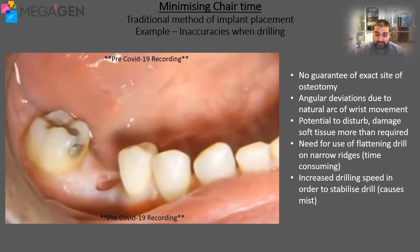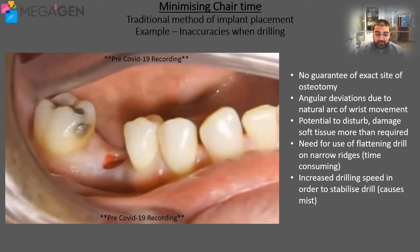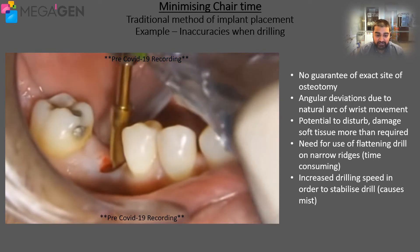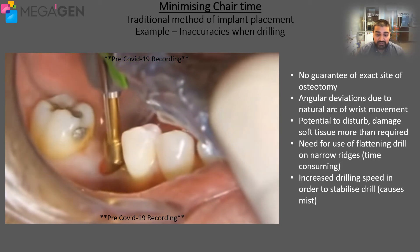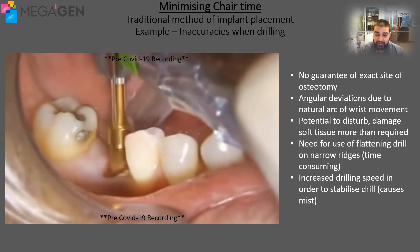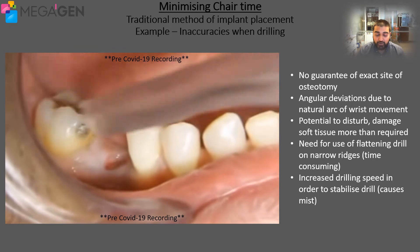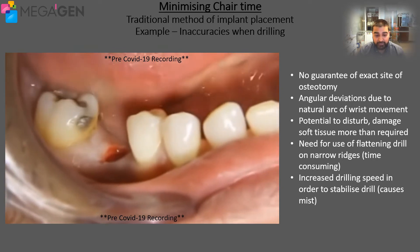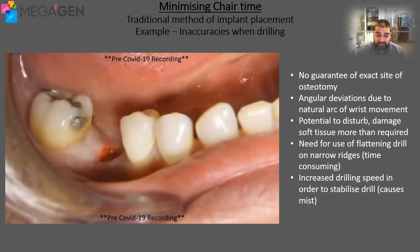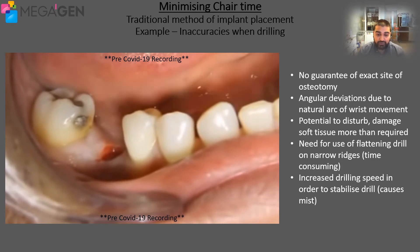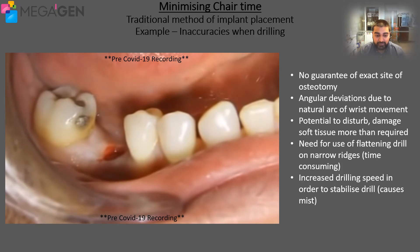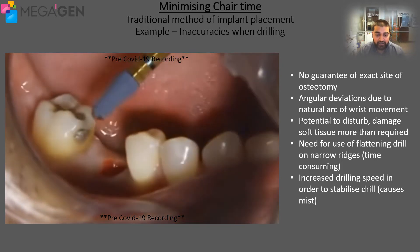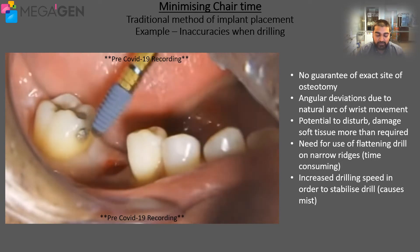Another thing to consider is that there is a natural arc to a person's wrist movement, meaning that there is a chance for angular deviation, which means that the osteotomy underneath the surface of the bone could have an irregular shape. One common practice when drilling is to actually increase the drilling speed, which increases the stability of the drill itself. Although this practice is successful, it does actually increase the chance of causing a mist, which in the current climate is something that we are trying to avoid.